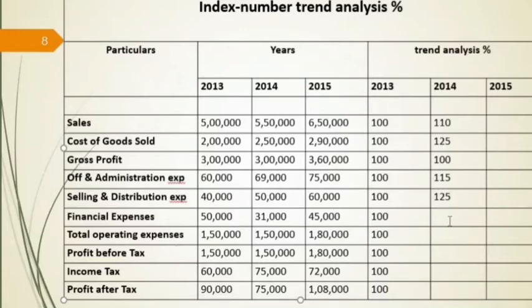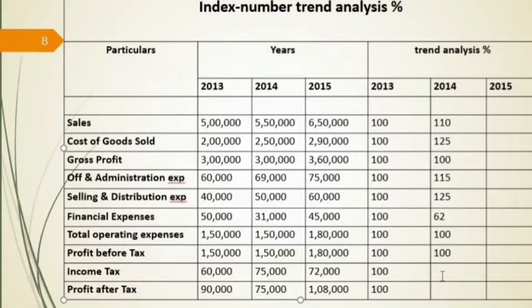Financial Expenses: 31,000 ÷ 50,000 × 100 = 62. Total Operating Expenses: 1,500,000 ÷ 1,500,000 × 100 = 100. Profit Before Tax: 1,500,000 ÷ 1,500,000 × 100 = 100. Income Tax: 75,000 ÷ 60,000 × 100 = 125. Profit After Tax: 75,000 ÷ 90,000 × 100 = 83.33.